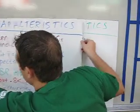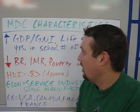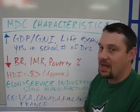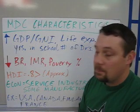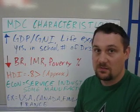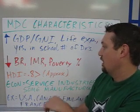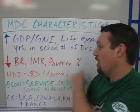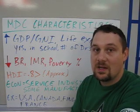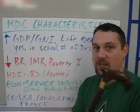And finally, we have MDCs, or more developed countries. In an MDC, your GDP and GNI per capita are usually very high, your life expectancy is high, the number of years in school is high, and your number of doctors is also high. The birth rate is probably the lowest out of any of the three levels, because people don't have to have as many children when they don't have to farm to survive. Their infant mortality rate is going down because their medical care is the best out of all three levels. Their poverty rate is also lower than the other two categories. In general, the average population gets older because you have fewer babies and people are living longer.